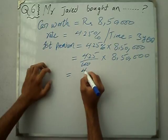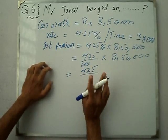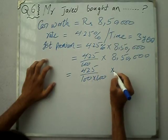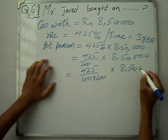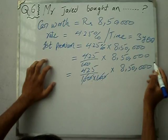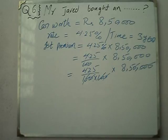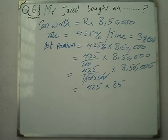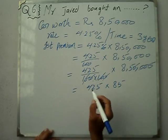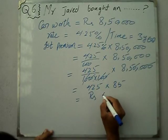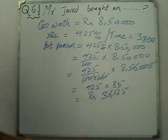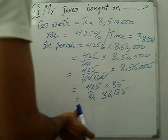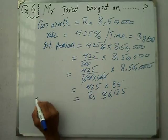4.25 divided by 100, multiplied by 8,50,000. We remove the decimal: 4.25 multiplied by 85. This gives us 36,125. So the first premium is Rs. 36,125.